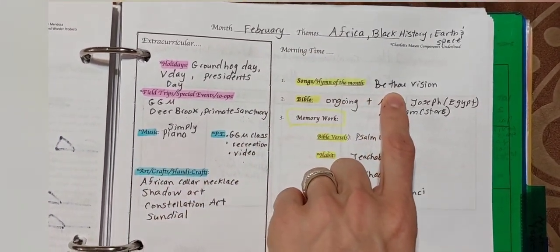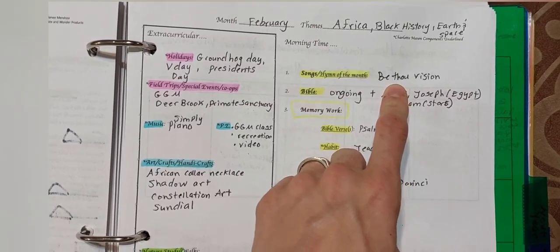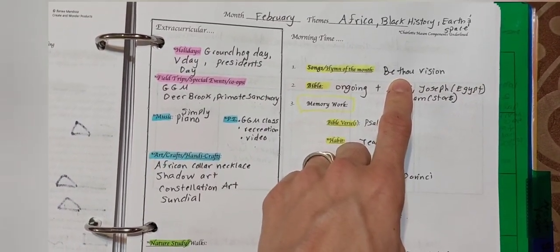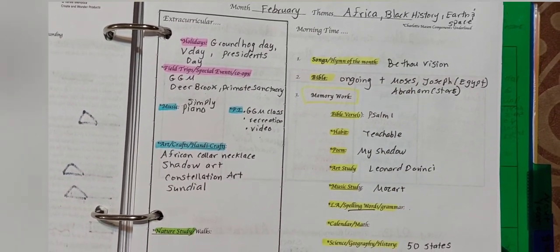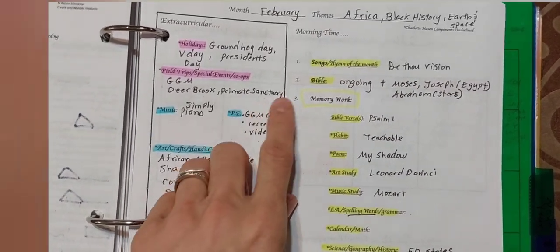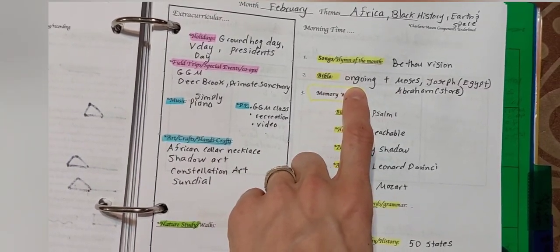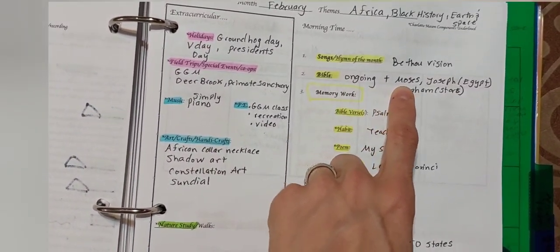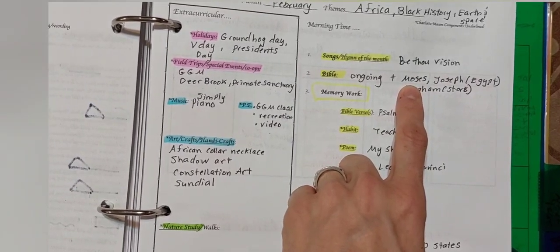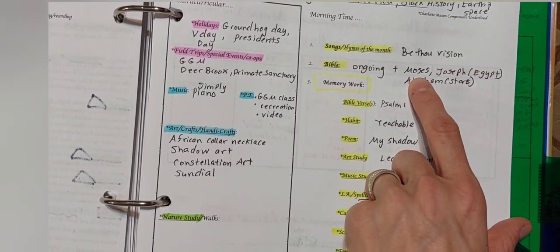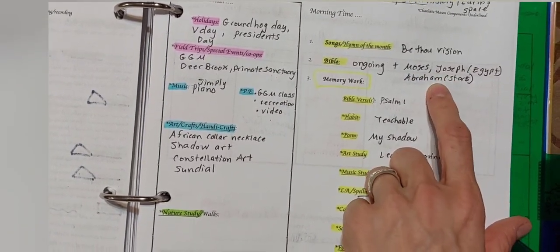For morning time, I put our name of our hymn. We also do a catechism song here and there or the Bible literacy songs like for Ten Commandments or Fruit of the Spirit, things like that, books of the Bible. And we do an ongoing Bible story book, and then this month we might just, when I do lessons like about Egypt and the stars, connect back to our knowledge of Moses, Joseph, and Abraham.